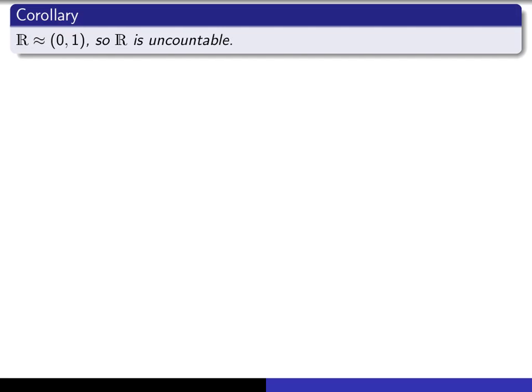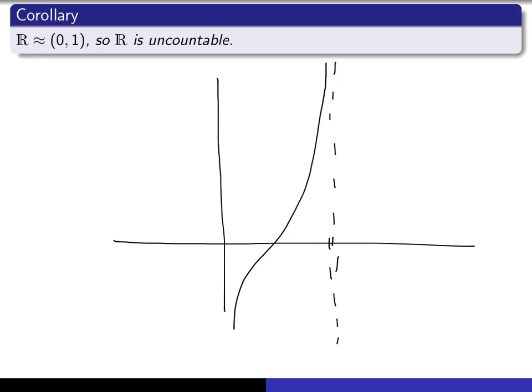Okay, so let me draw XY coordinate axes and let's look at the interval from 0 to 1, and I'm going to just construct a function like this. So it's some kind of a tangent function. It's a dilation and a translation of the usual tangent function, and there you see that is clearly a bijection from (0,1) to the set of real numbers, and that establishes the corollary.